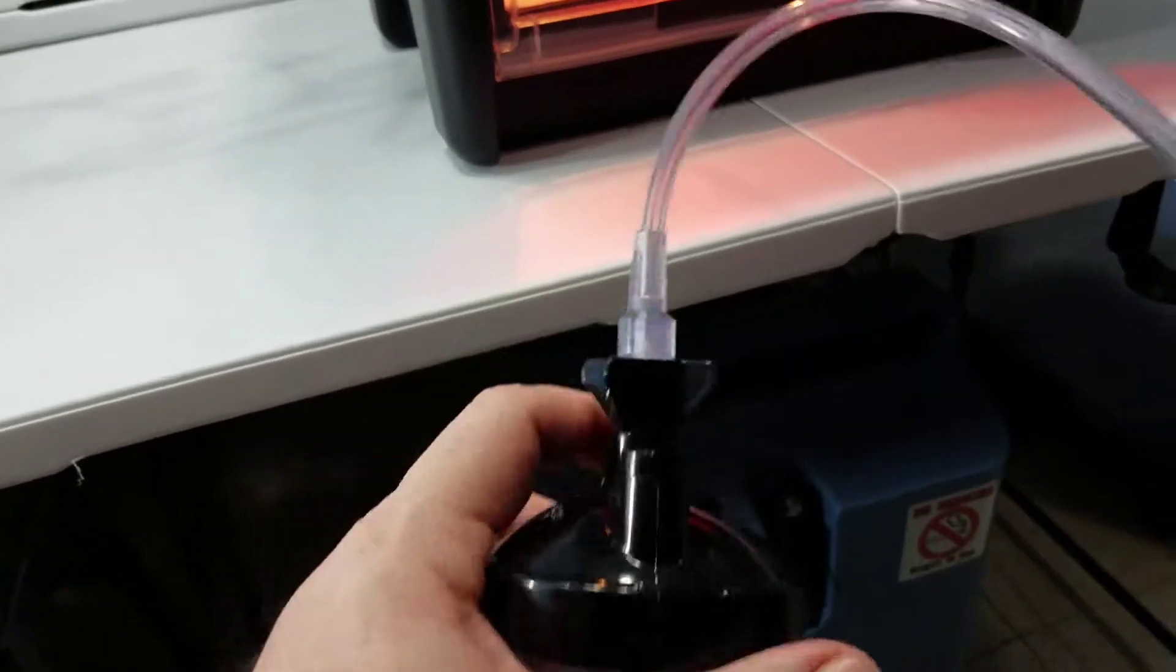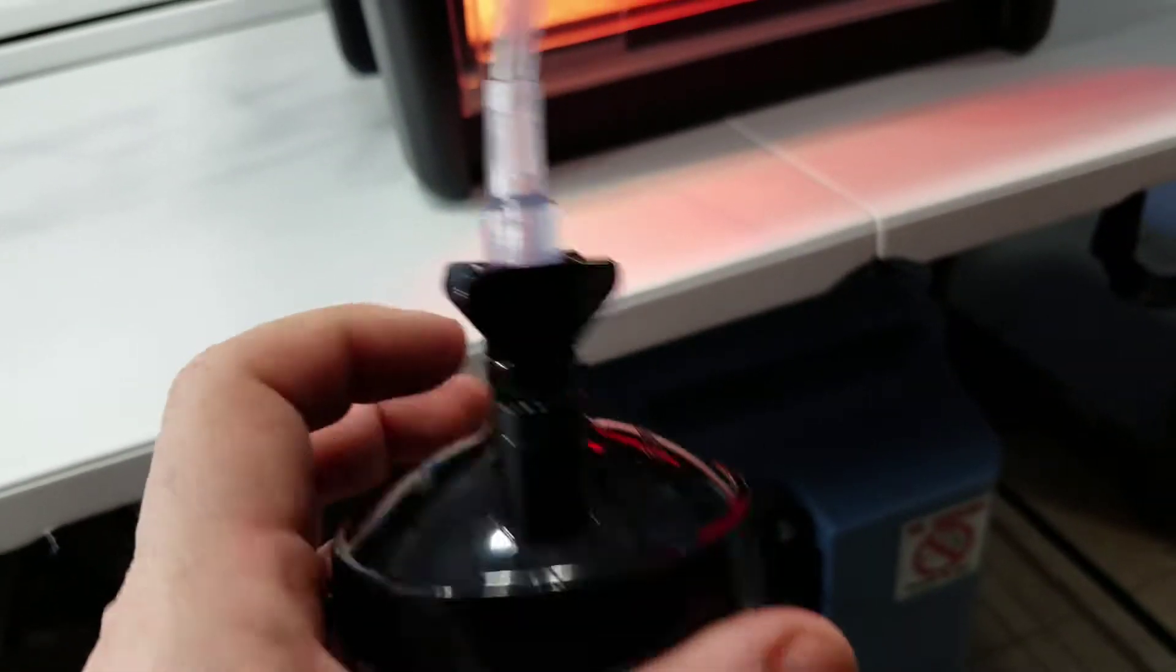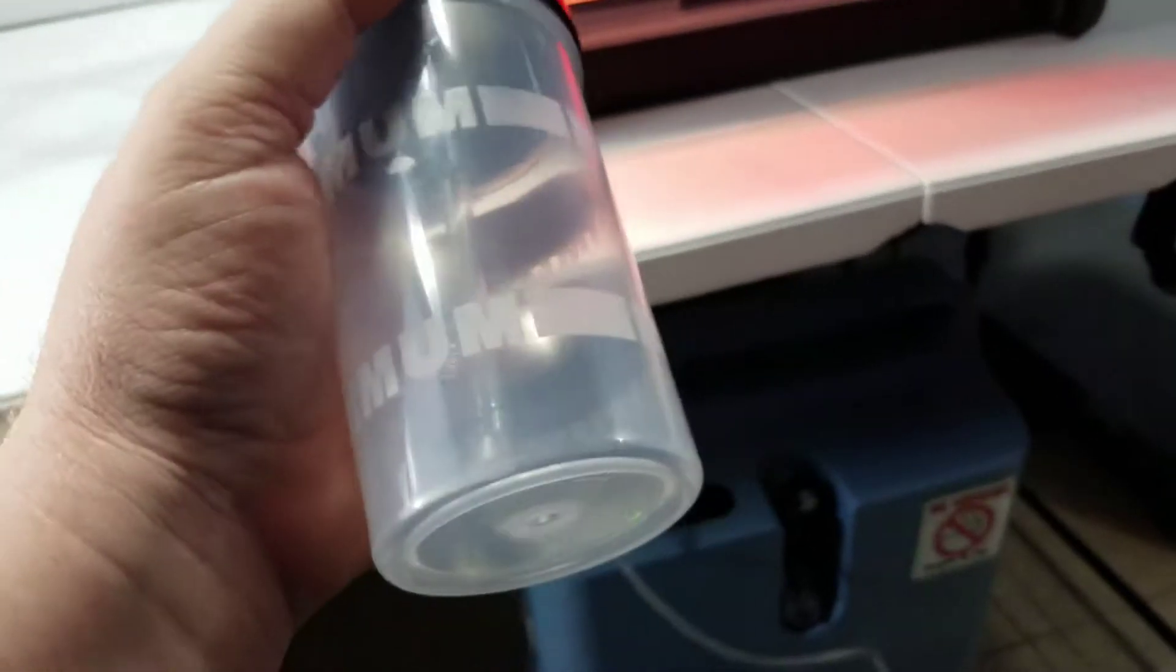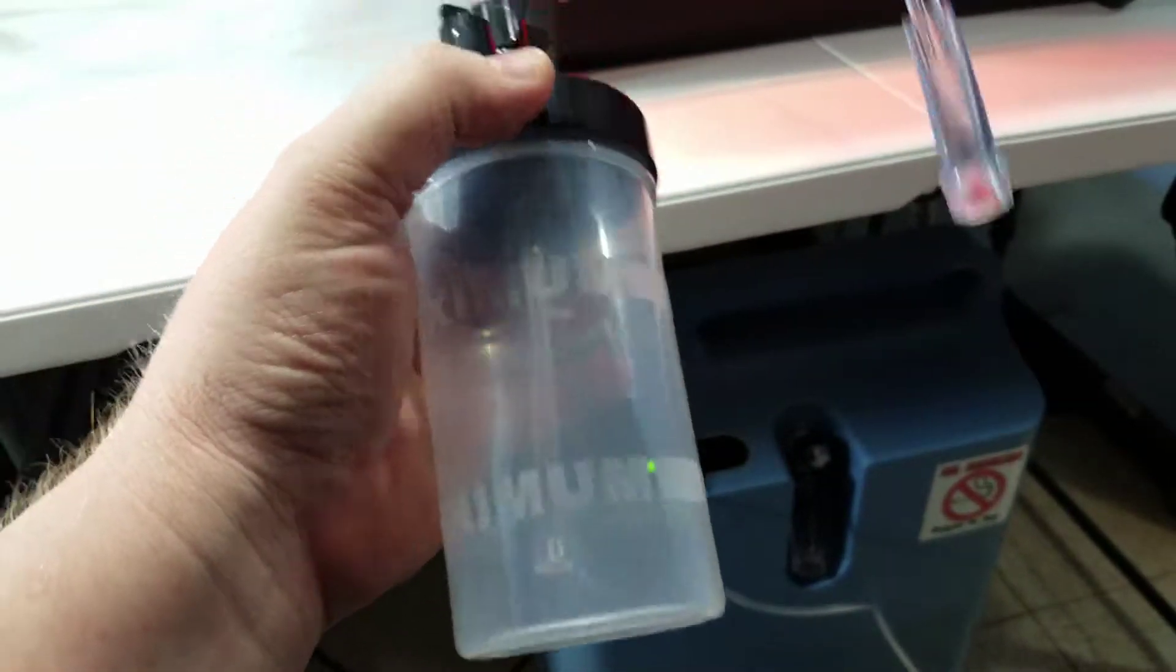First thing you're gonna do is unpackage it. You're gonna see a tube like this with a threaded end that goes into the top of the bubbler cup, and you're gonna see a cup like that. I'm gonna fill this thing up with water.